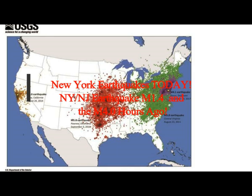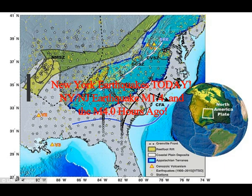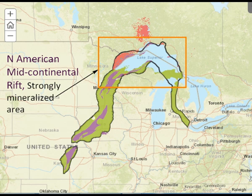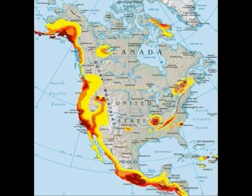New York earthquakes today. New York, New Jersey earthquake 1.4 magnitude. This was hours before the magnitude 4, basically at the border of Canada and the United States, upstate New York — the Adirondacks felt the shaking.